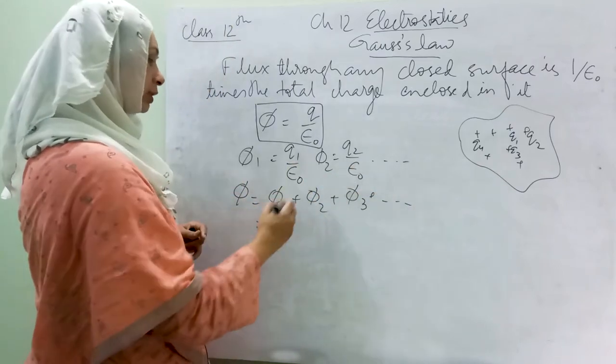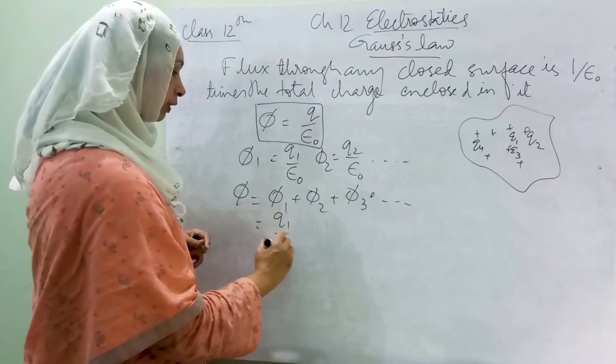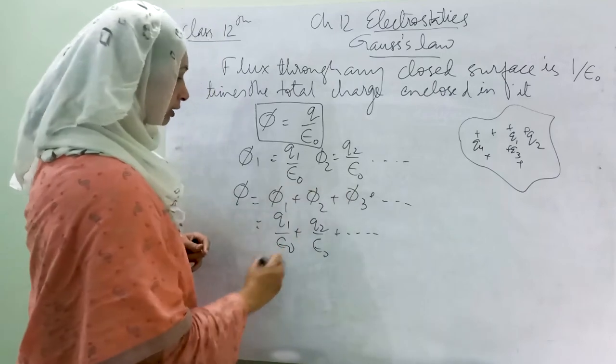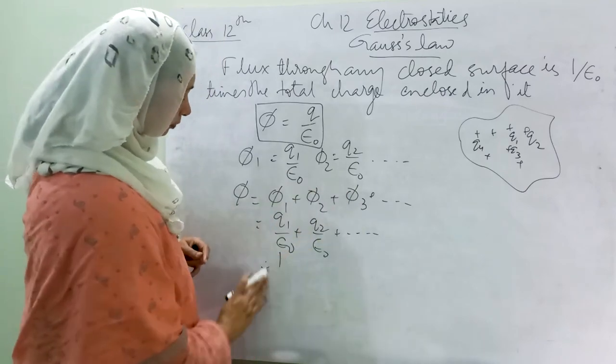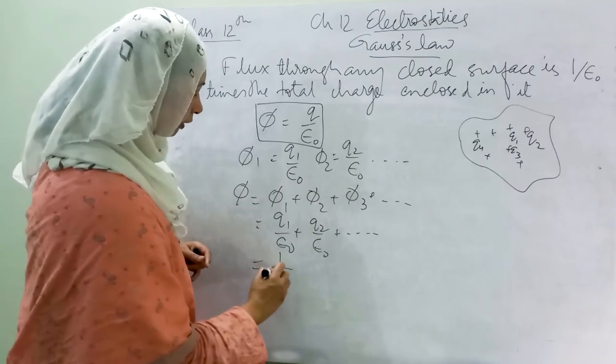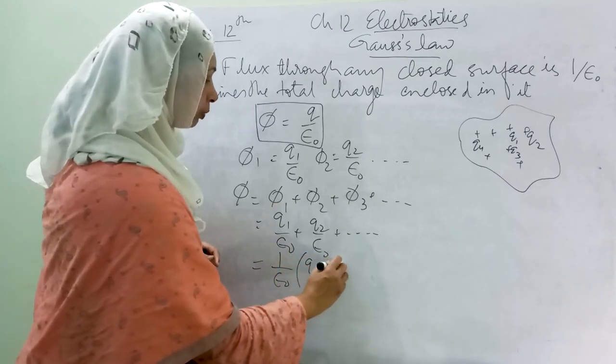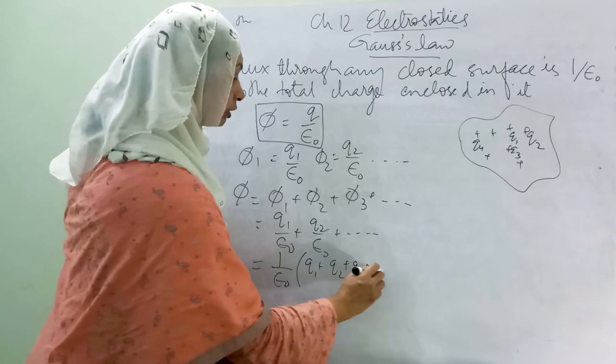So we take the sum: Q1 divided by epsilon naught plus Q2 divided by epsilon naught and so on.